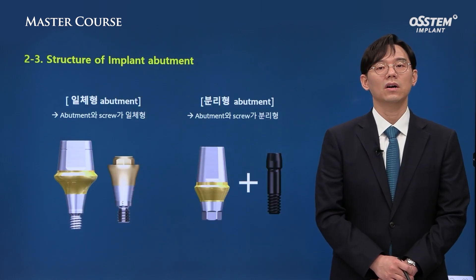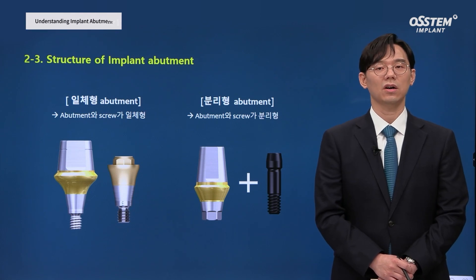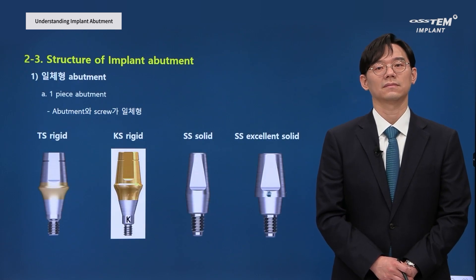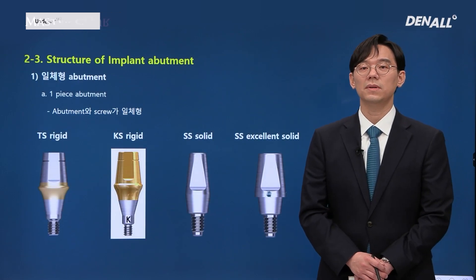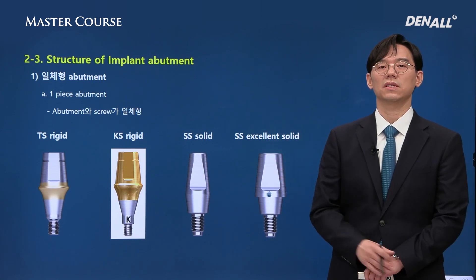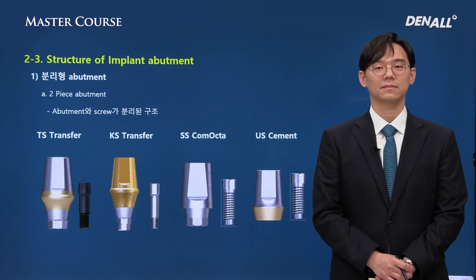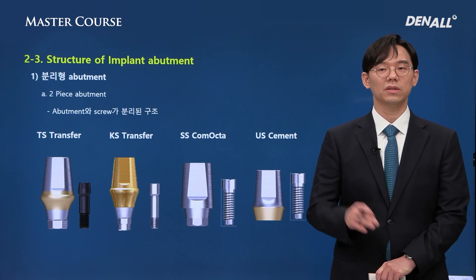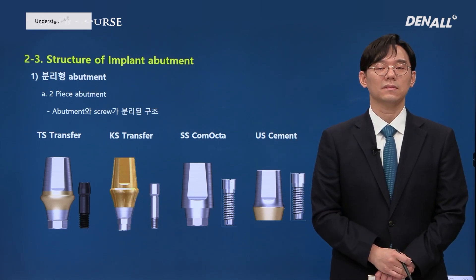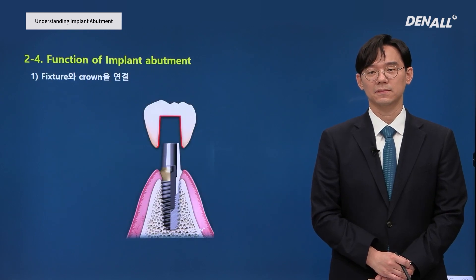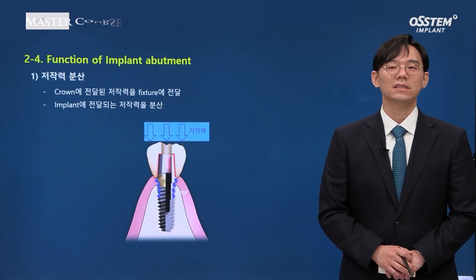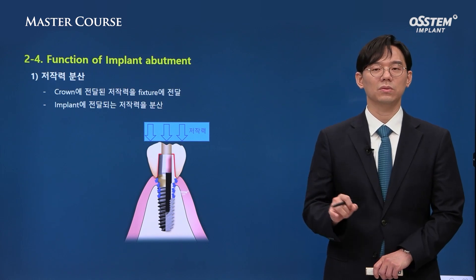Abutments can be divided into one-piece and two-piece types. In the case of one-piece, there is a screw within the abutment; two-piece has a separate screw. One-piece abutments that fit the implant system can be connected as they rotate, just like healing abutments, so they do not have a separate hex. You can also connect with a separate screw where the abutment does not rotate and is placed vertically. Once the abutment is connected, the crown is cemented on top.